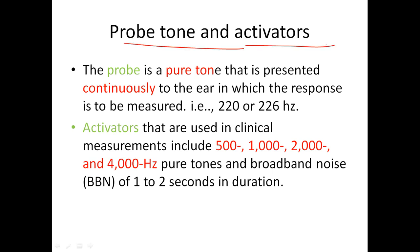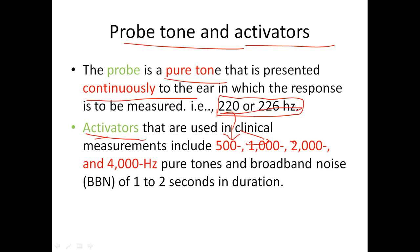It is important to differentiate between the probe tone and the reflex activator. The probe tone — 226 Hz — is a pure tone continuously presented in the ear where the response is measured. The activator (also called stimulus) is the sound of interest used to elicit the reflex — for example, 500 Hz, 1 kHz, or 2 kHz. The activator is only presented during the stimulus presentation, while the probe tone runs continuously.